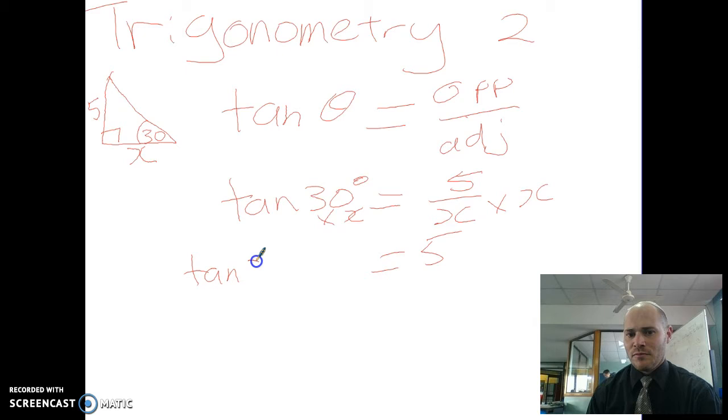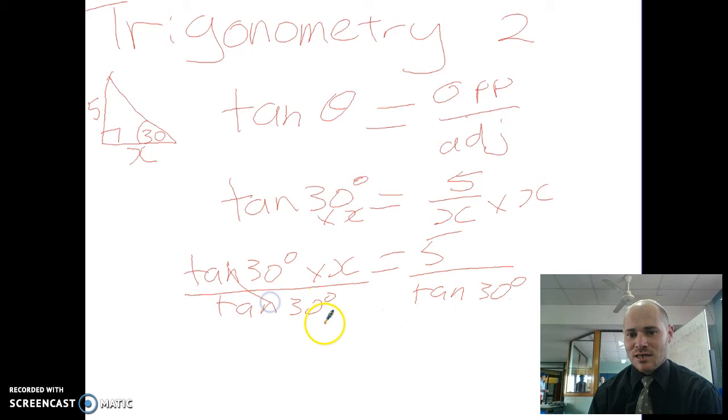So I'm then left with tan of 30 degrees times x. Now my goal is to isolate the variable. So to do that at the moment I have tan 30. So I have to do the opposite of times tan 30, Georgia, which is? Divide tan 30. Well done Georgia. So I divide that side by tan 30, and I divide this side by tan 30.